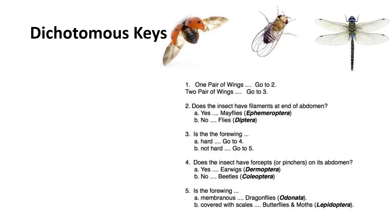Dichotomous keys are used to systematically identify insects. It starts with two options or branches at each step. Di is Greek for two. It is based on visible similarities and differences.